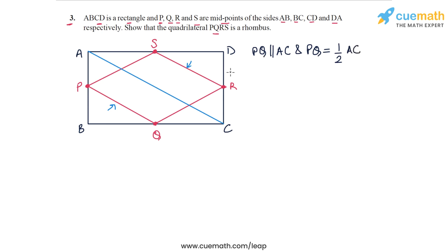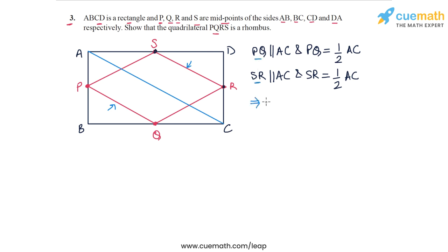Similarly, if you apply the midpoint theorem to triangle DAC — S is the midpoint of DA and R is the midpoint of DC — we have SR is parallel to AC and SR is equal to half of AC, again using the midpoint theorem. From these two relationships we can claim that PQ and SR are parallel to each other.